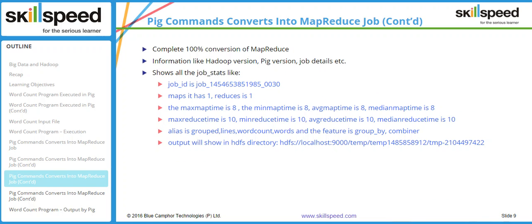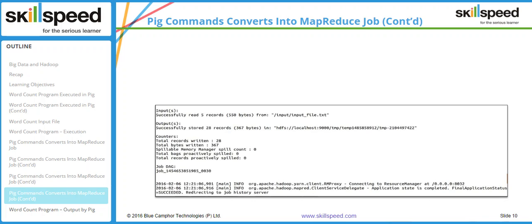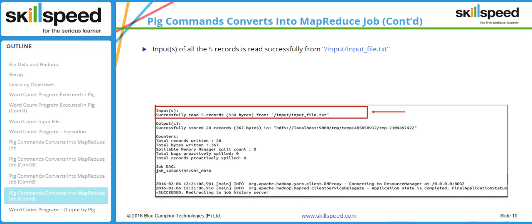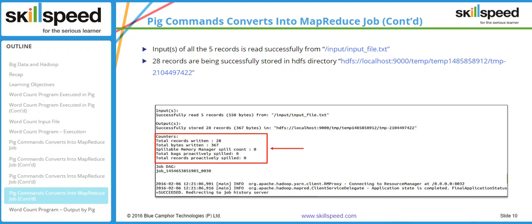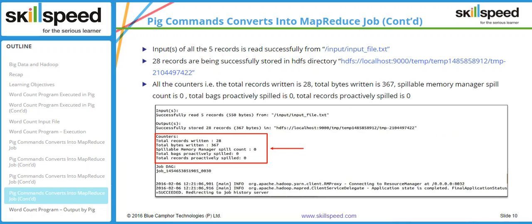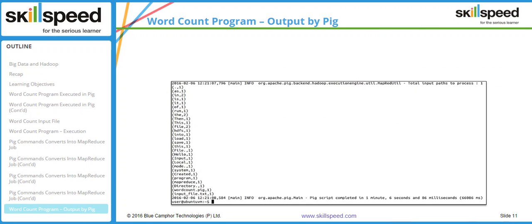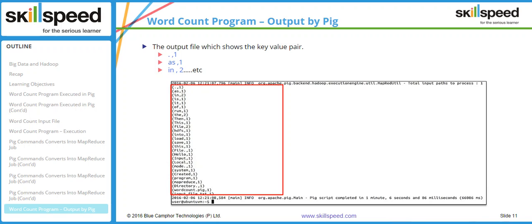Arrow 12 shows that there are five records which were read successfully from our input file, and arrow 13 shows that 28 records are being successfully stored into the HDFS directory. The last arrow shows the counters and records written. At the end of the Pig operation the output is displayed on screen since we used the DUMP operator, and as you can see it has counted the number of occurrences of every word and the result is correct.